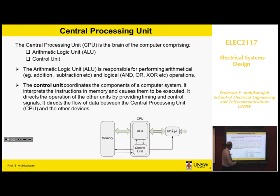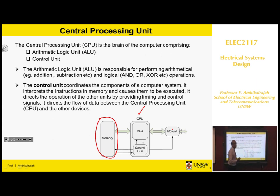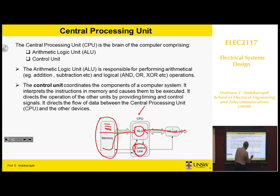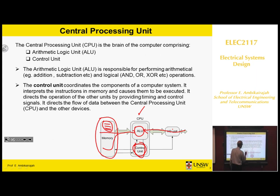Looking at the memory block, I've already explained the data memory as well as the program memory. Now we look at the central processing unit, which can be divided into two units. One is the arithmetic logic unit, which does all the calculations, all the logical and arithmetic operations, based on the instructions written in the non-volatile program memory. It also has a control unit which decides whether it takes data from the program memory or from the data memory. A central processing unit has these two blocks, connected to each other, and operates based on the program you have written.